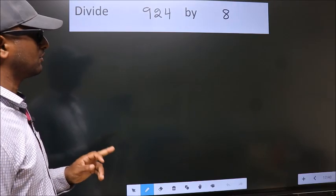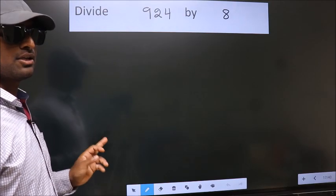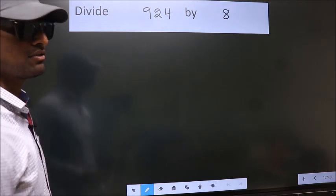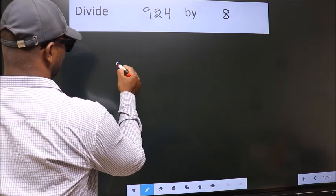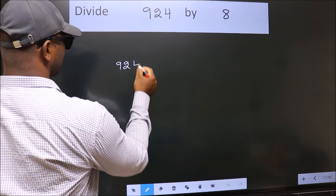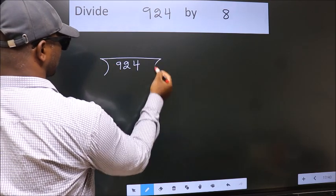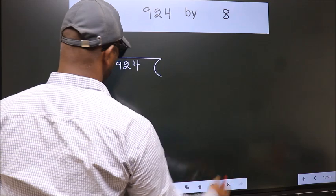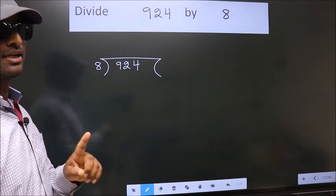Divide 924 by 8. To do this division, we should frame it in this way. 924 here. 8 here. This is your step 1.